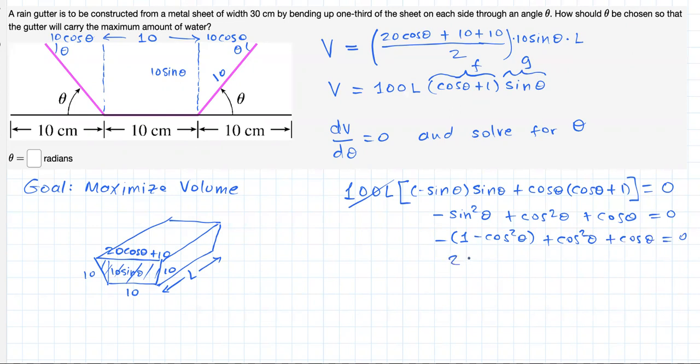Simplifying, we end up with this: 2 cosine squared of theta, plus cosine of theta minus 1 equals 0. This can be solved using the quadratic formula or even factoring.